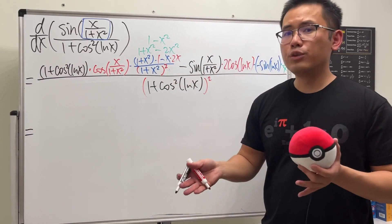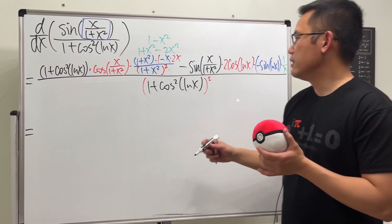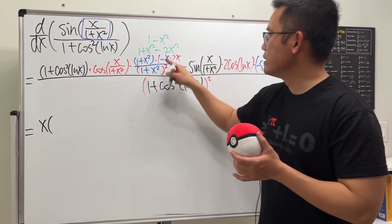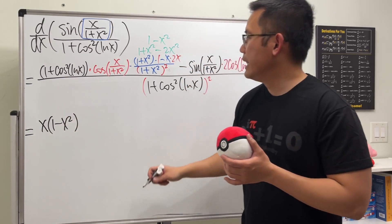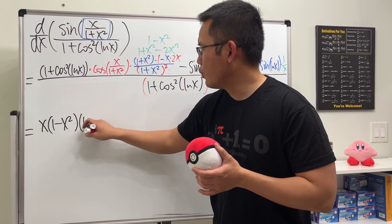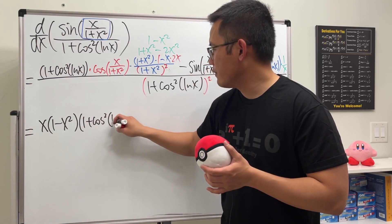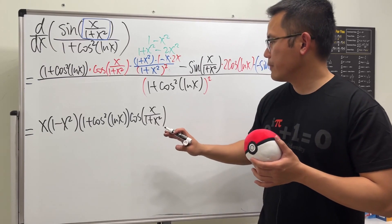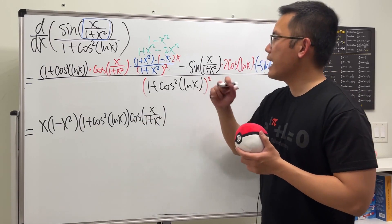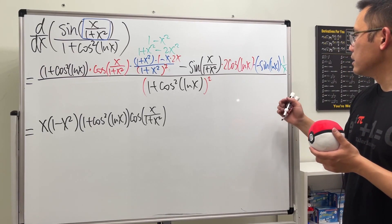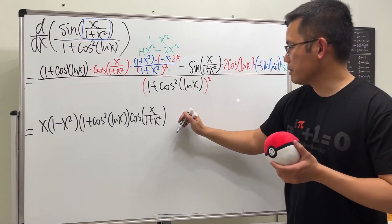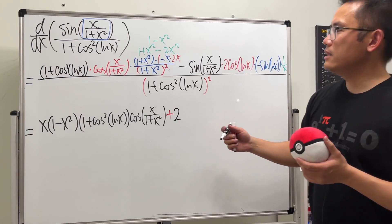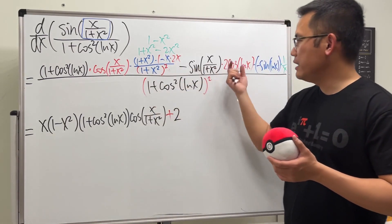We like to put polynomials first. Multiplying top and bottom by x gives us an x out front. Then we have (1 − x²), followed by (1 + cosine²(ln x)), and then cosine of (x / (1 + x²)). For the second part, the negatives cancel and we also have a factor of 2, so it becomes a plus 2.